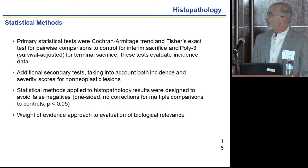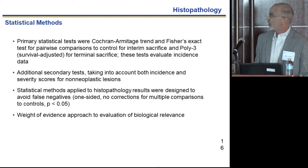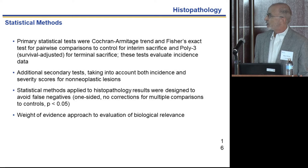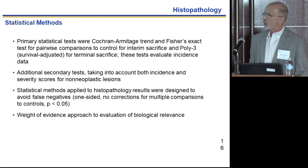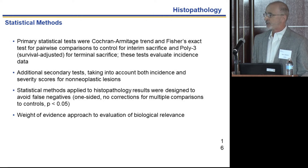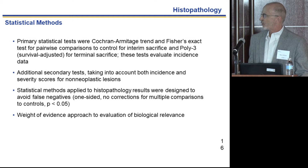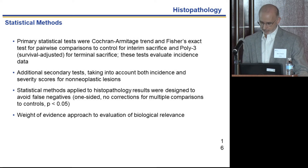We used common statistical tests based on incidence data for the one- and two-year data. Because of survival issues in the two-year data, we used a survival-adjusted test for those animals. We applied additional secondary tests accounting for incidence and severity scores for non-neoplastic lesions; the conclusions were not different. The tests are one-sided with no correction for multiple comparisons, and p<0.05 was set as the criterion. This study, like all NTP studies, uses a weight-of-evidence approach to evaluation of biological relevance of findings.